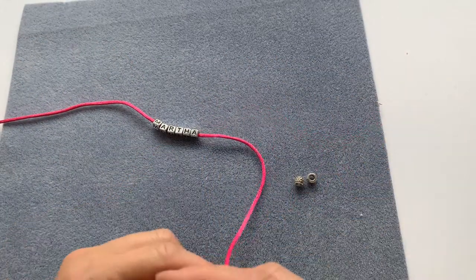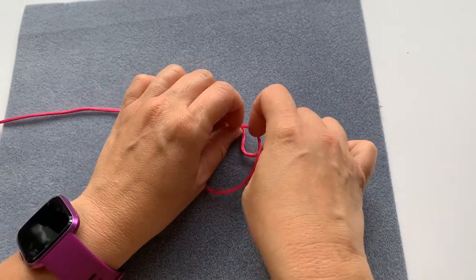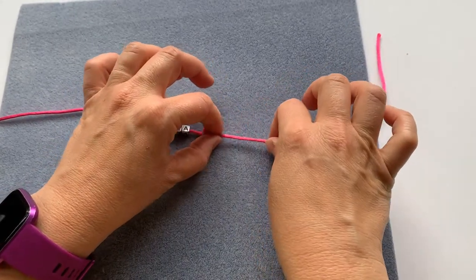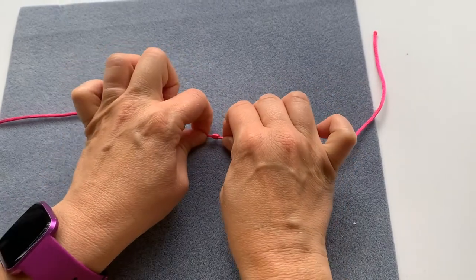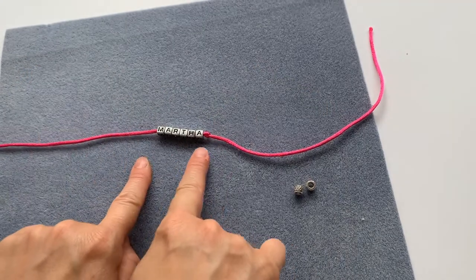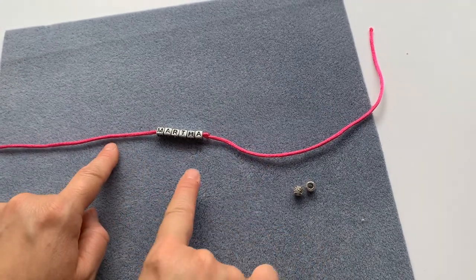So I've threaded my beads on and all I'm going to do is quickly use an overhand knot to tie and make sure those beads don't come off. So my beads are currently in the center of my cord, so I've added one knot.